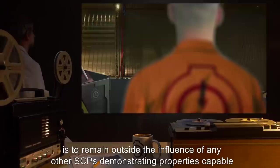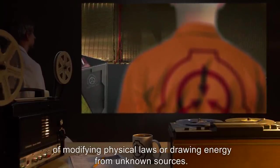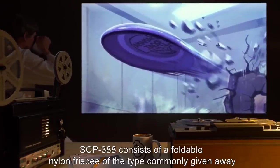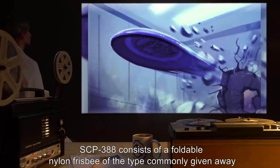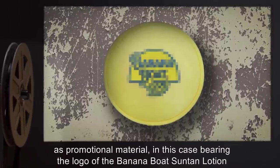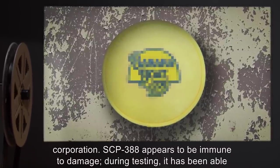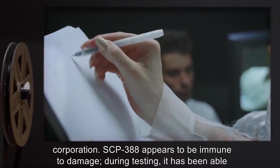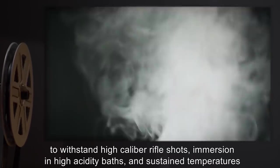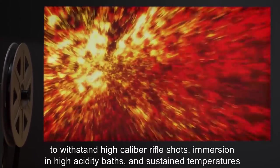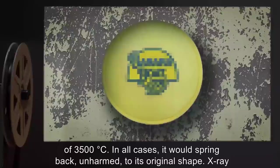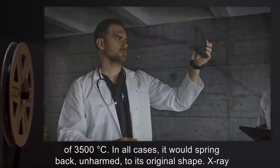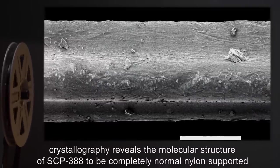Unless undergoing experimentation, SCP-388 is to remain outside the influence of any other SCPs demonstrating properties capable of modifying physical laws or drawing energy from unknown sources. Description: SCP-388 consists of a foldable nylon frisbee of the type commonly given away as promotional material, in this case bearing the logo of the Banana Boat suntan lotion corporation. SCP-388 appears to be immune to damage. During testing, it has been able to withstand high-caliber rifle shots, immersion in high-acidity baths, and sustained temperatures of 3,500 degrees Celsius. In all cases, it would spring back unharmed to its original shape. X-ray crystallography reveals the molecular structure of SCP-388 to be completely normal nylon supported by a ring of metal appearing to be aluminum.